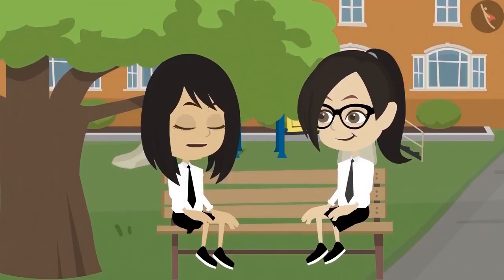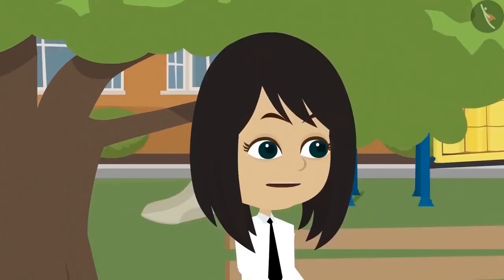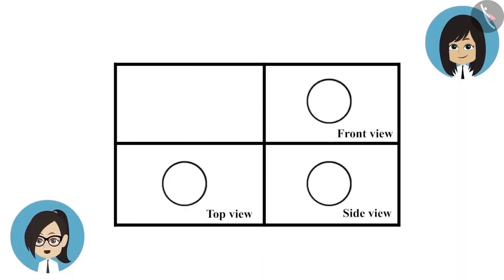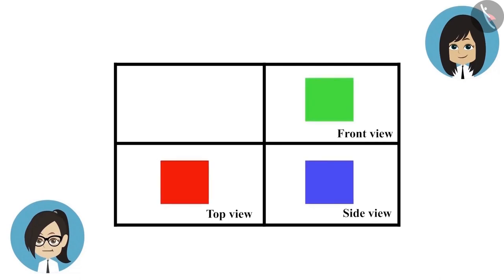Vandana, yesterday I was drawing the top view, side view and the front view of different objects. I found some objects whose shape you will not be able to guess easily. Well, this will be a lot of fun. Show. See this. Hey, these are all in the shape of a circle. How did this happen? Is this really the drawing of an object? Yes, and it can be easily found. I have another drawing in which all three views of one object are the same. All these are in the shape of a square and that too of the same size.